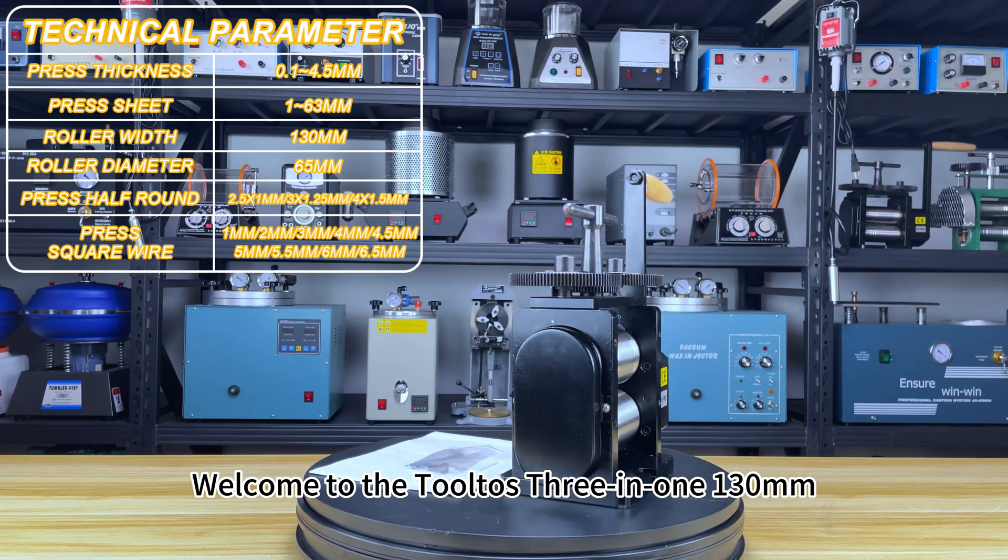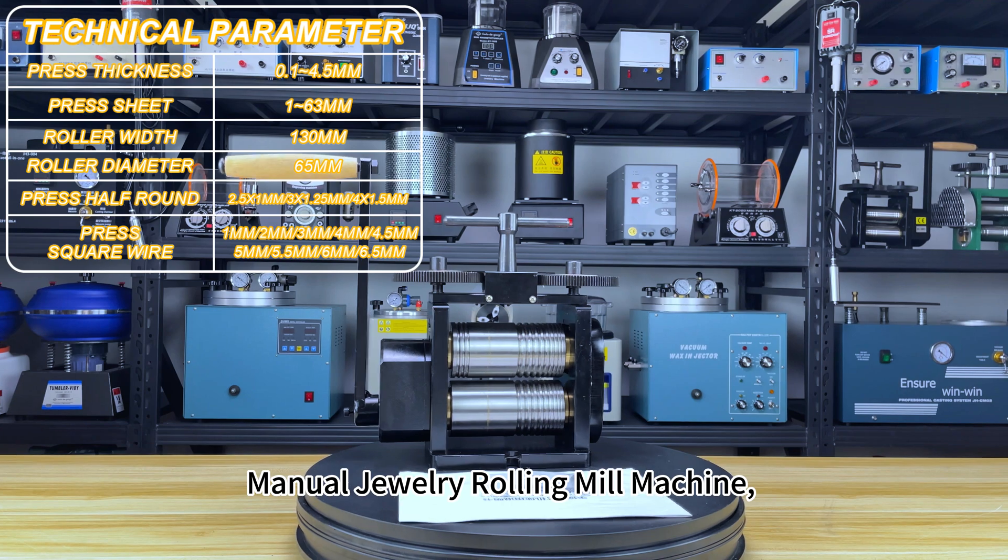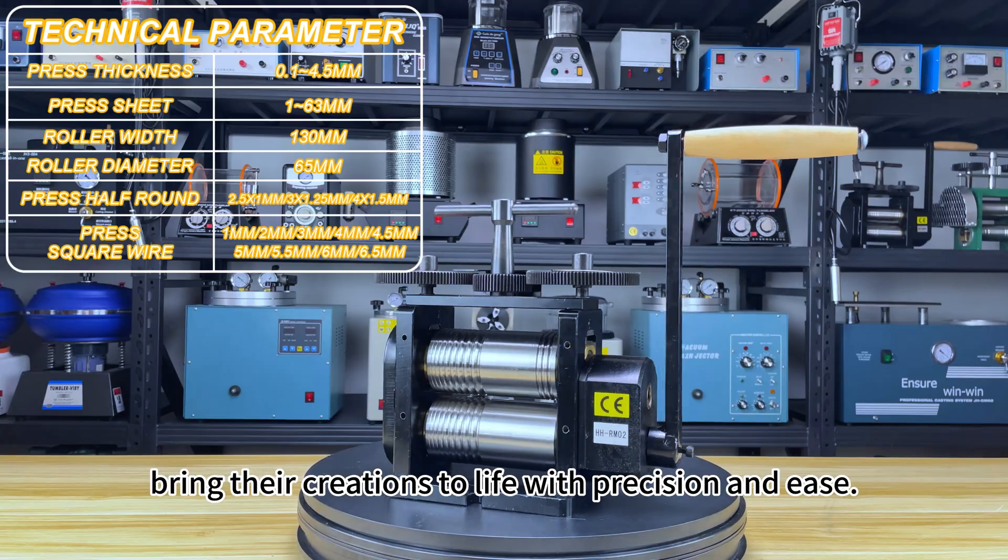Welcome to the Tolto's 3-in-1 130mm Manual Jewelry Rolling Mill Machine, designed to help jewelers and craftsmen bring their creations to life with precision and ease.